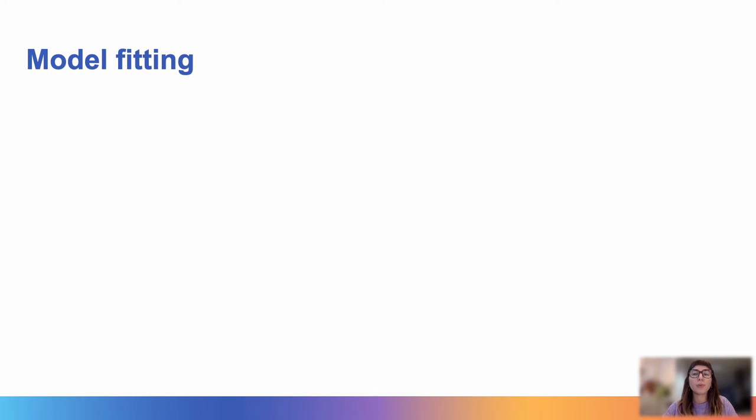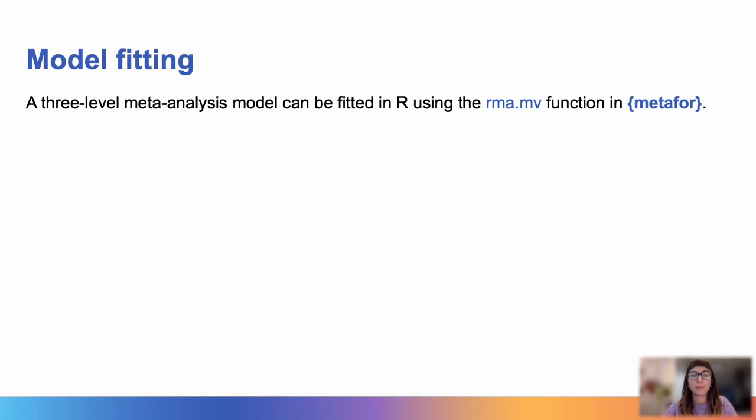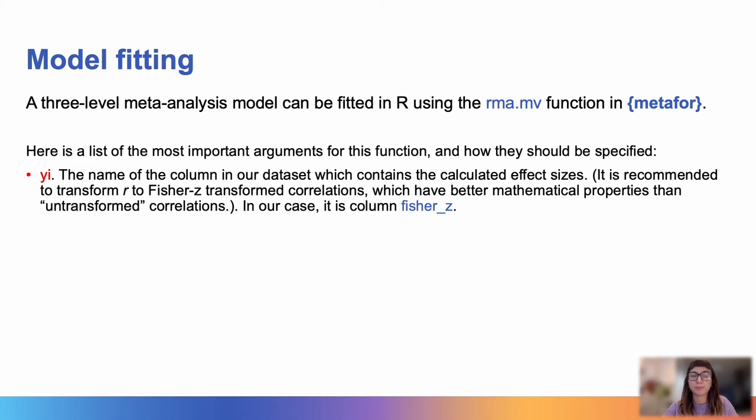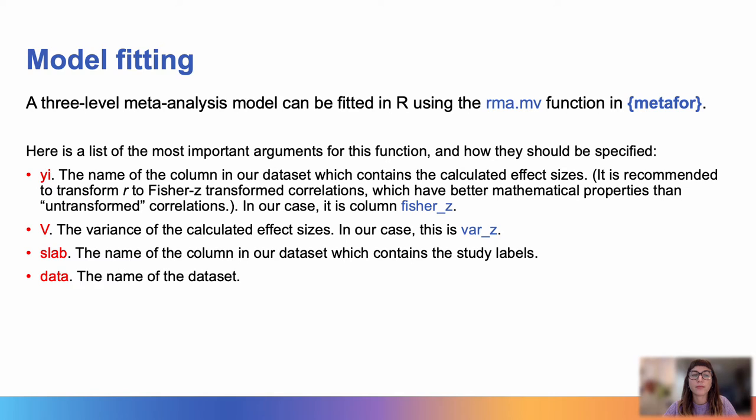Okay, so how do we fit our random effects three-level model in R? We can use the rma.mv function in the metafor package, and here I have listed the most important arguments for this function, and I've also specified what they refer to in our data file.